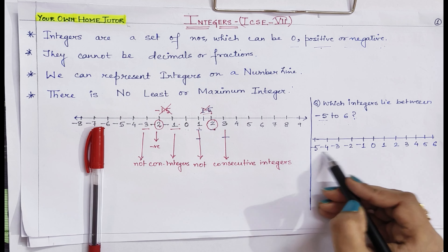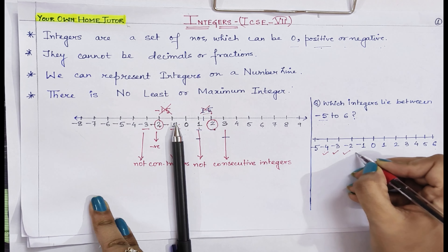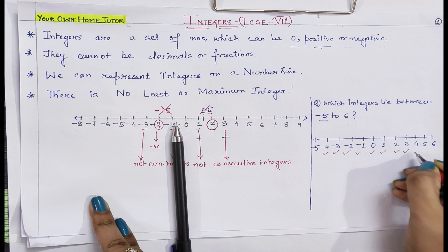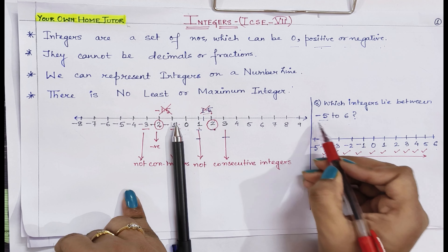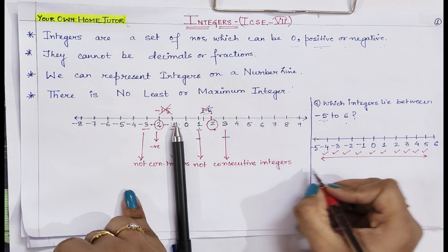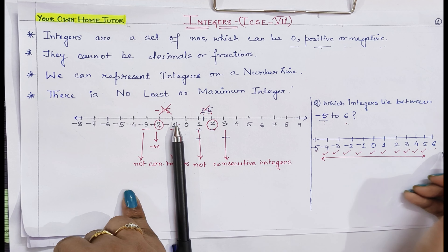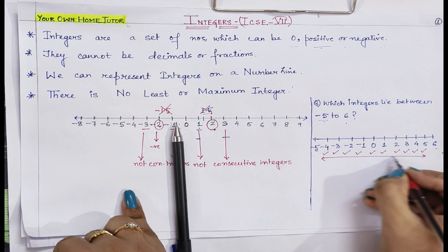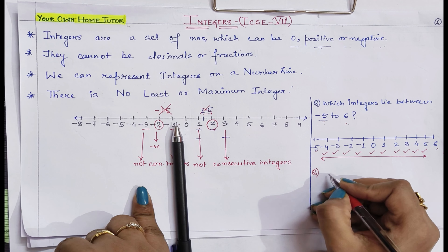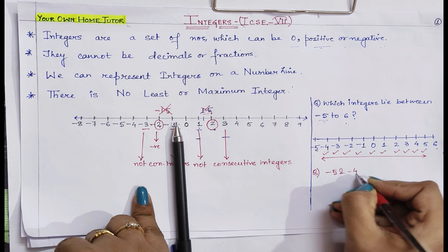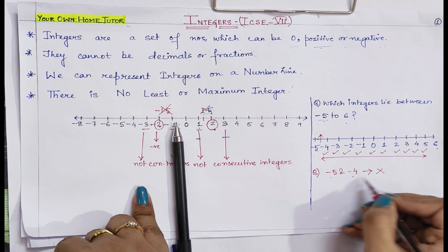Which integers are lying between this range? Minus 4, minus 3, minus 2, minus 1, 0, 1, 2, 3, 4, 5 — all these integers lie between minus 5 and 6. Note that minus 5 and 6 are non-consecutive integers, which is why so many integers lie between them. But if I asked which integers lie between minus 5 and minus 4, the answer would be none, because they are consecutive integers.